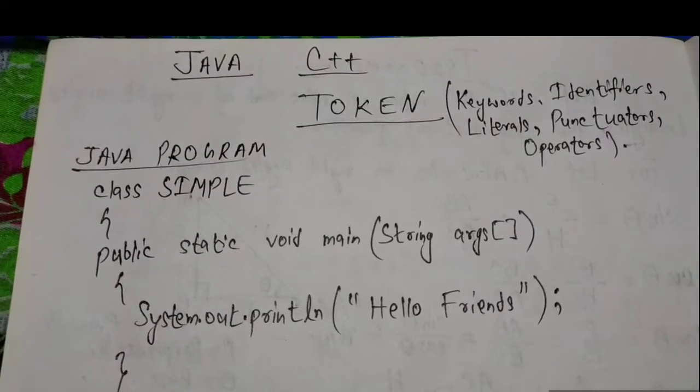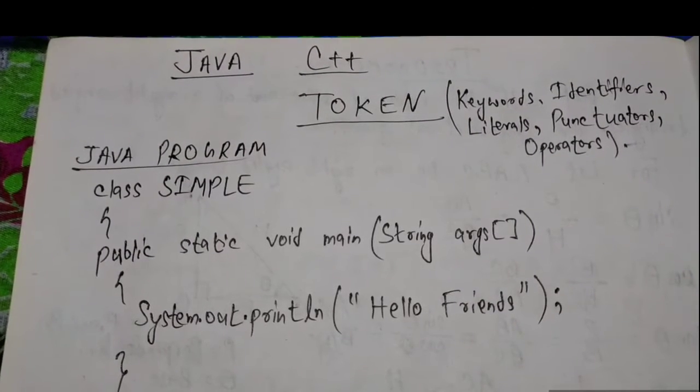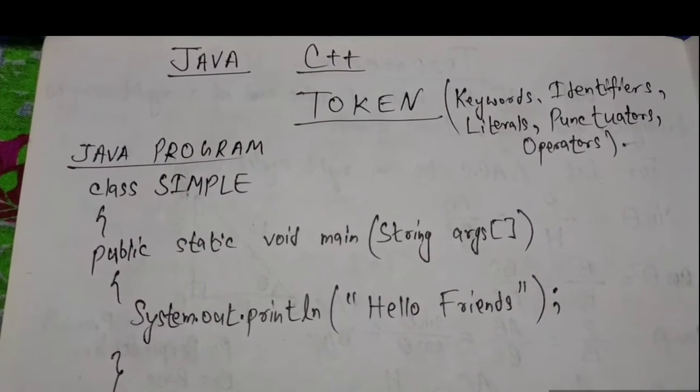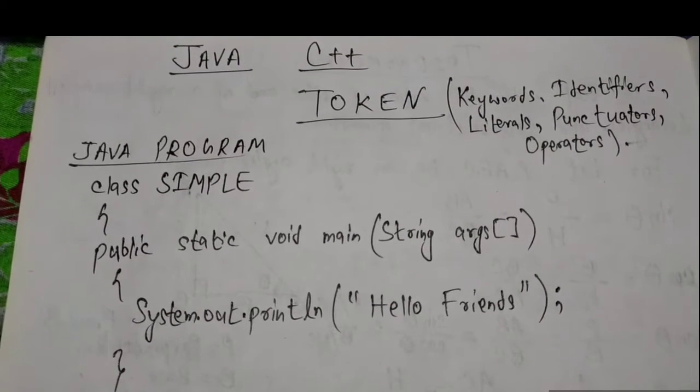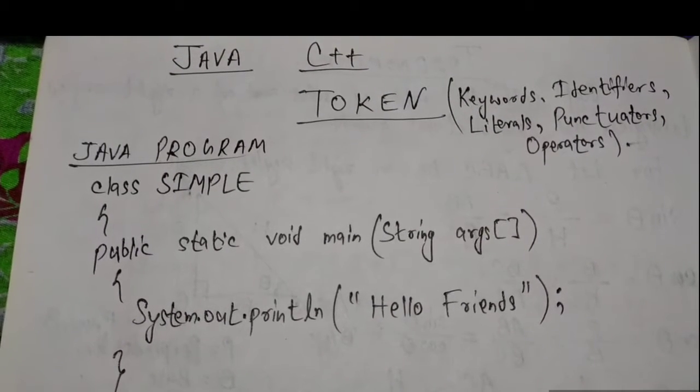Today we are going to learn about the chapter token, which is an important chapter in programming languages like Java and C++.